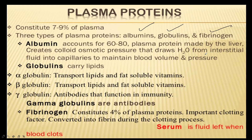Globulins carry the lipids. There are three types: alpha, beta, and gamma, which transport all the lipids and fat-soluble vitamins. Gamma globulins are the antibodies that function in immunity. Fibrinogen constitutes 4 percent of plasma protein and is an important clotting factor. It is converted into fibrin during the clotting process. Thromboplastin is present during blood clotting. After clotting, the leftover fluid is called serum.